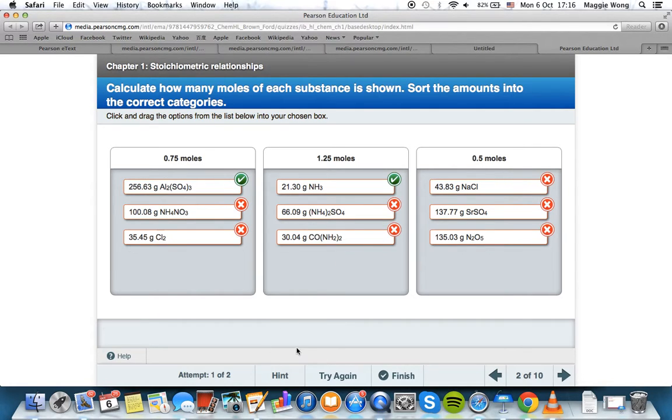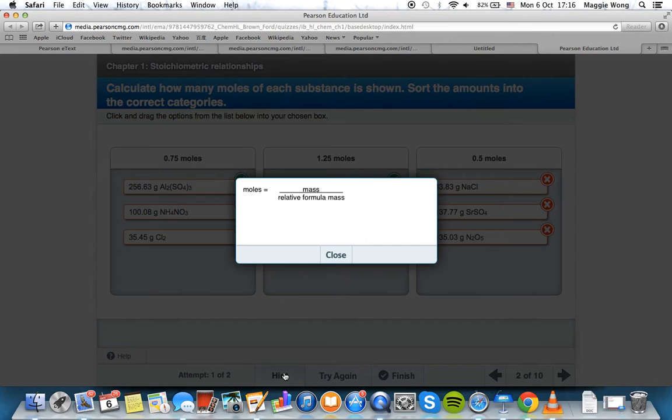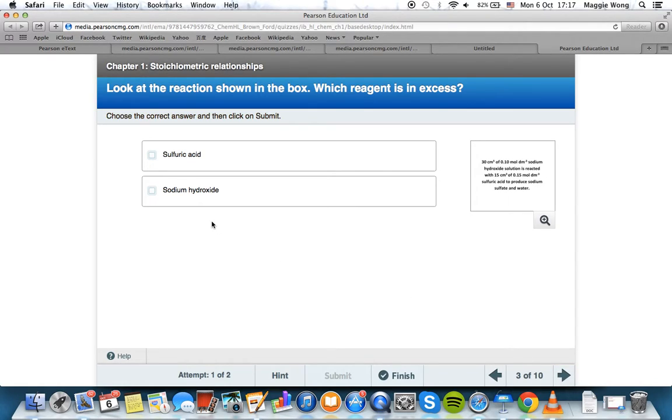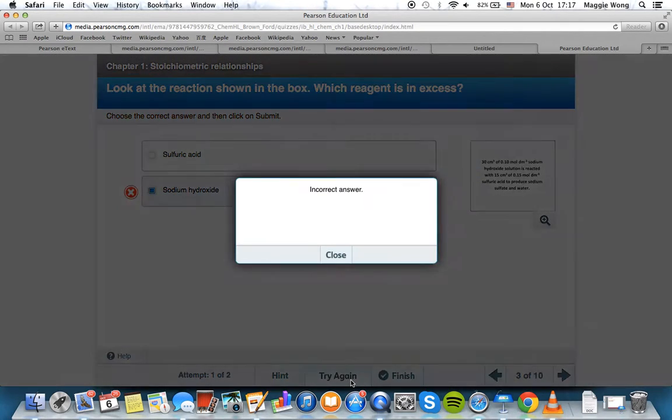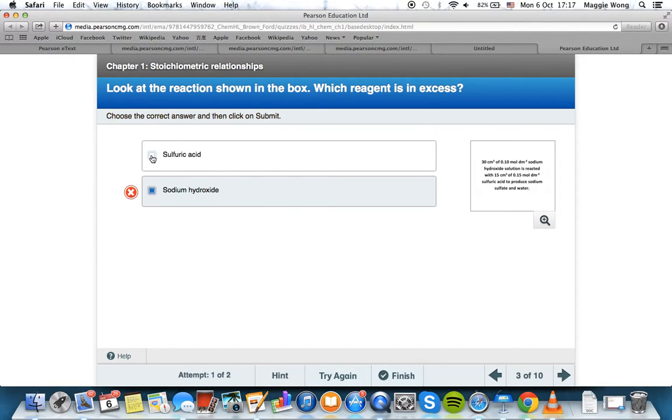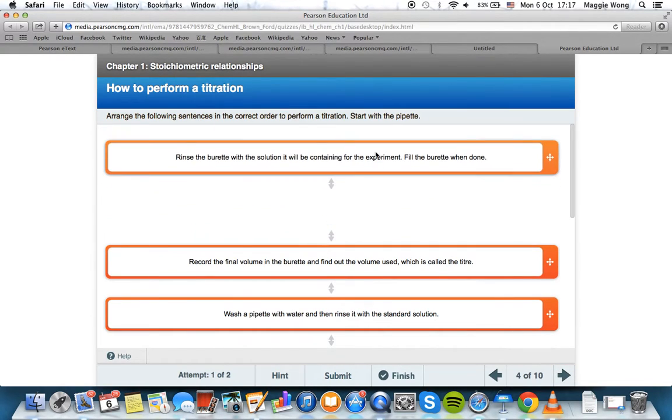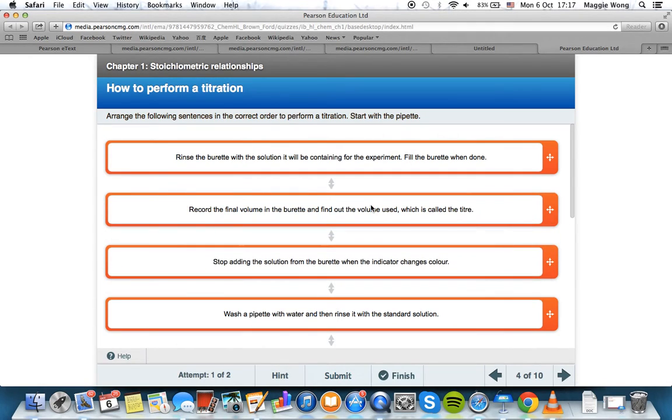Now you've got two attempts, so you can either try again and also take a look at the hints and then you can move on to the next questions as well. There are different types of questions, so now you just saw the drag and drop option question. You also have these ones where there are multiple choice questions. Or you have ones that you have to put them in the right order. So there are different types of questions to test the understanding of a particular topic.